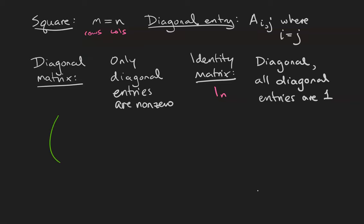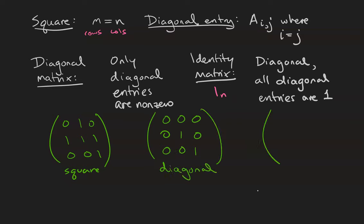Here is an example of a square matrix 0 1 0 1 1 1 0 0 1. Here's an example of a diagonal matrix 0 1 1 and then all the off diagonal entries have to be 0. And here is i3 with 1s down the diagonal and 0s everywhere else.